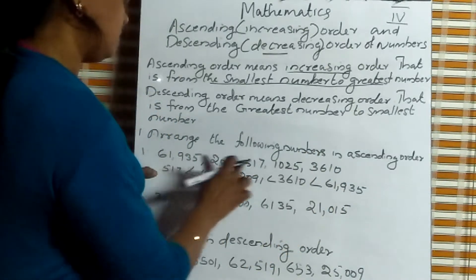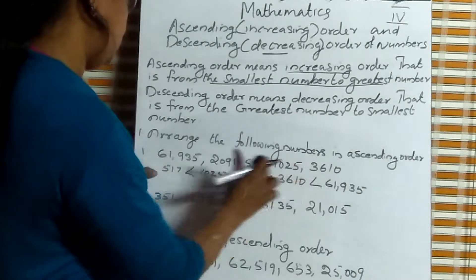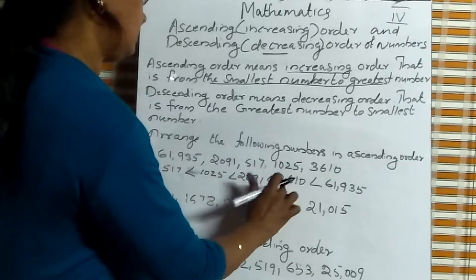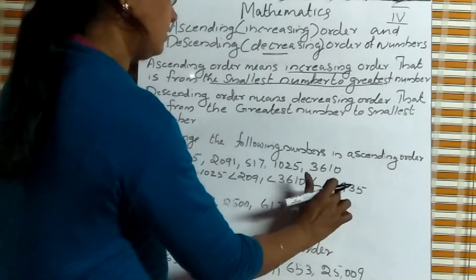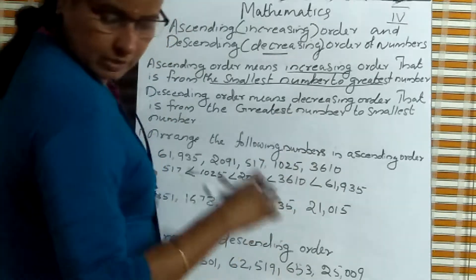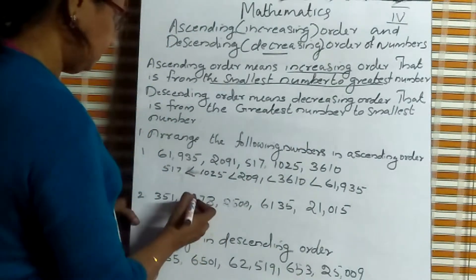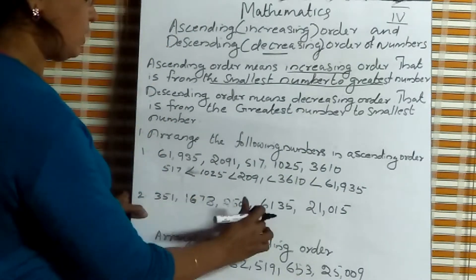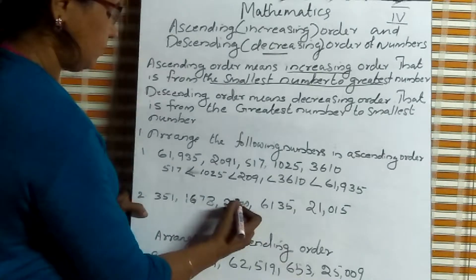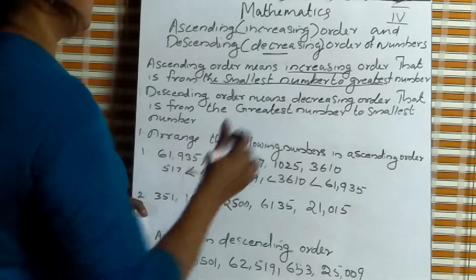The least number is 517. Next one is 1,025. Next one is 2,091. Next one is 3,610. And 61,935 is the largest number. Now write the second set also in ascending order. Ascending order means increasing order.